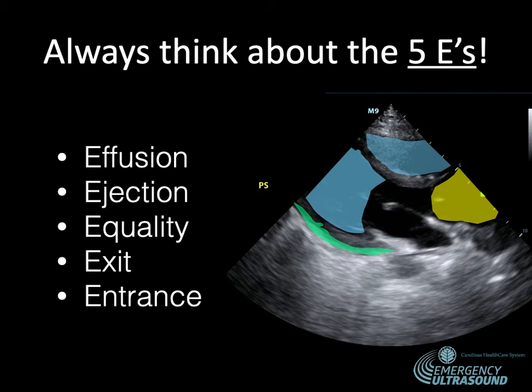We've now reviewed how to do a focused assessment of the heart. This doesn't represent a comprehensive echo, but always looking at these five things gives you a good global assessment quickly — even in minutes for a critically ill patient in the emergency department. Always look for an effusion using the descending aorta as your marker for pericardial versus pleural effusion, look at the left ventricular ejection fraction, look at the relative size of the left and right ventricles, and look at the exit — the aortic root — and the entrance — the IVC. Please feel free to email me with any questions.